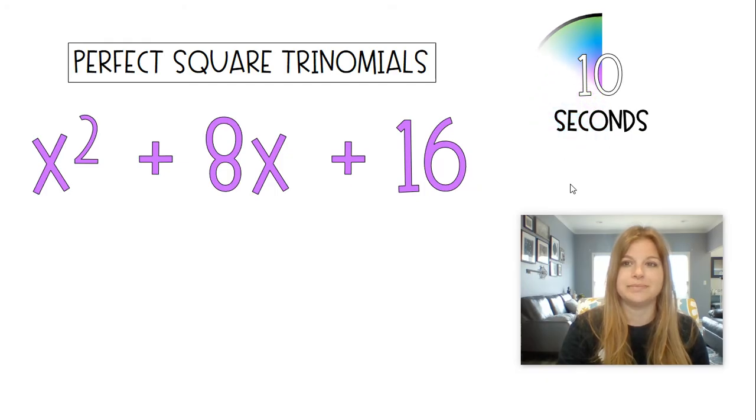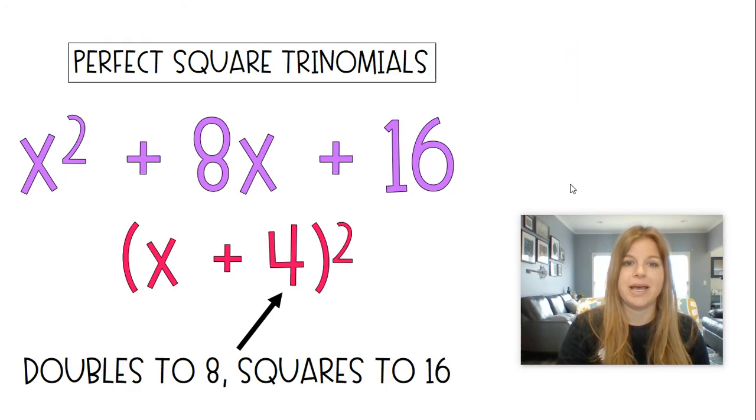x squared plus 8x plus 16. It's an easy one. Should be x plus 4 squared. 4 doubles to get 8 and it squares to get 16. Next one.